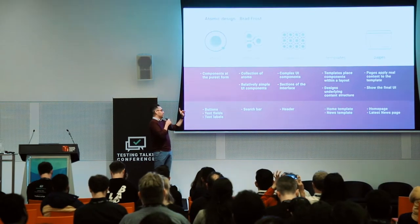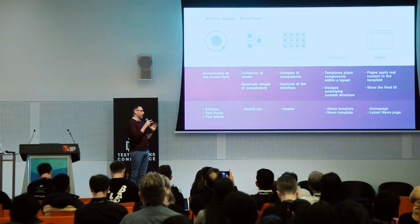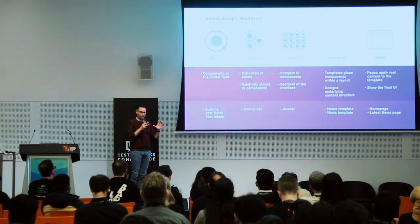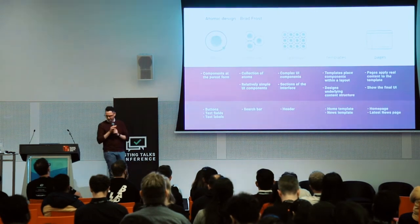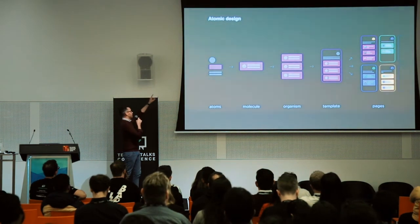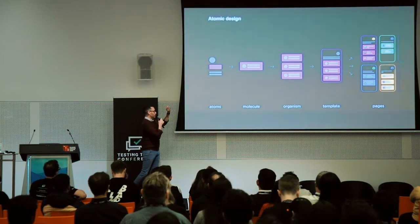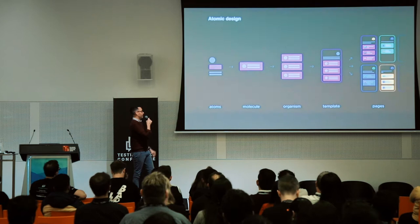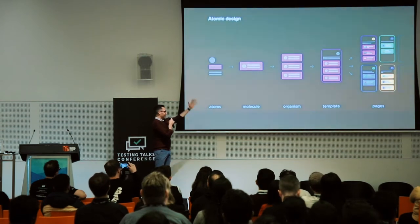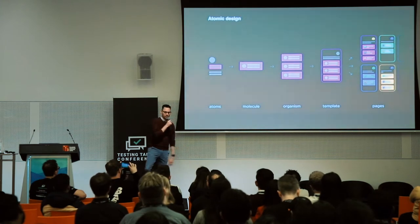Then the scientific analogy goes out the window and we look at templates and pages. Templates are just how the components fit together onto the page, and pages are when you've added all the images and text as well. So you can see atoms like an avatar, a card and some text combine to become a molecule — a contact card — and then an organism — your contact list — and how that looks in a template and then a page.